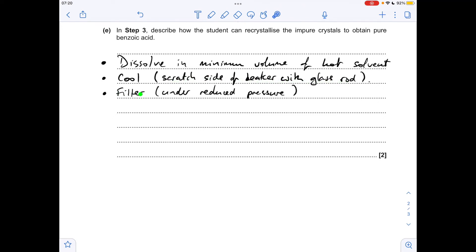Next thing you'd say is filter it, and the extra detail for that is under reduced pressure, or you could say using Buchner apparatus. Next thing you'd need to say, and you'd need to say all of this, wash with cold solvent. Obviously hot solvent would re-dissolve it, and we don't want that. The final thing you'd need to say is dry. So for that second mark, you'd need to say cool, filter, wash with cold solvent, and dry.